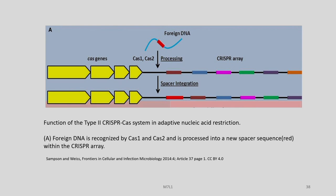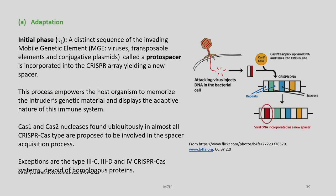The function of the type 2 CRISPR-Cas system is adaptive nucleic acid restriction — virus annihilation by cleaving its DNA. We know the role of Cas1 and Cas2, which is conserved in all classes and types of the CRISPR-Cas system, and foreign DNA is recognized by these two. In the adaptation stage, this is the initial phase or tau-1: a distinct sequence of the invading mobile genetic elements — which may be viruses, transposable elements, and conjugative plasmids — called the protospacer, is incorporated into the CRISPR-Cas array yielding a new spacer. This process empowers the host organism to memorize the intruder's genetic material and displays the adaptive nature of this immune system.